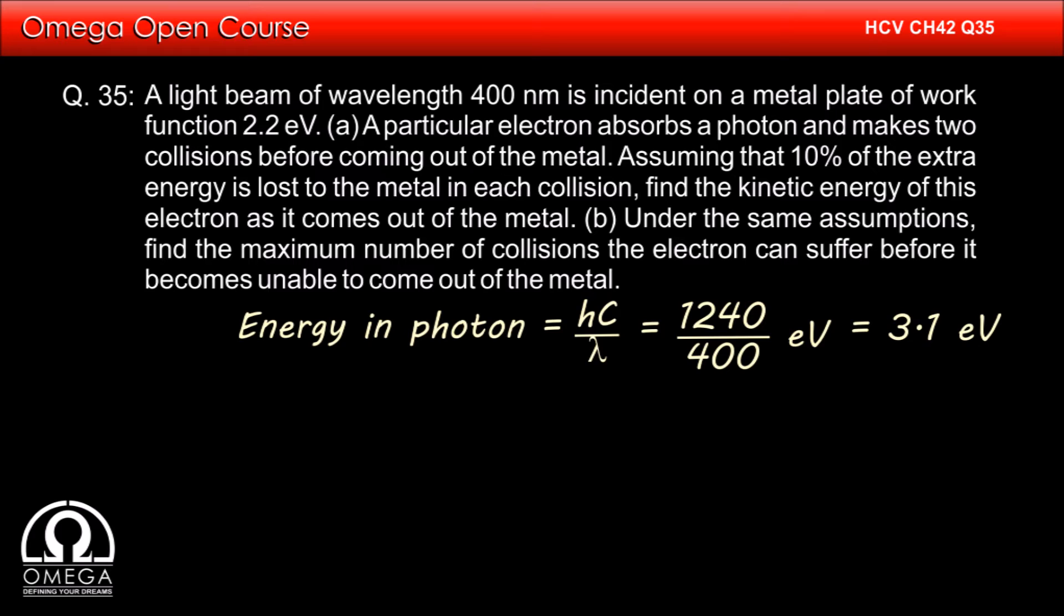Now when the electron makes the first collision, it will lose 10% of this energy, or in other words, it will retain 90% of its original energy. Therefore, the energy of the electron after the first collision is 3.1 times 0.9, that is 2.79 eV.